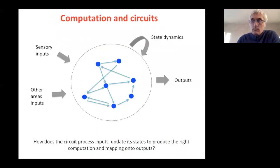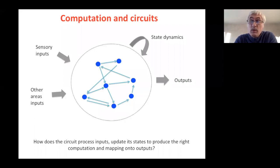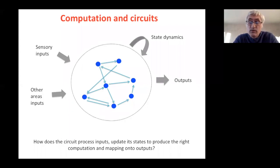One very basic question we are all interested in in computational neuroscience is how computation can actually be performed or carried out by circuits. Suppose we look at a circuit defining some brain area — this circuit will receive some inputs, whether sensory or from higher-level areas, and it will update its states according to some dynamical rules, possibly also through plasticity, and then produce some outputs.